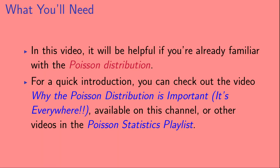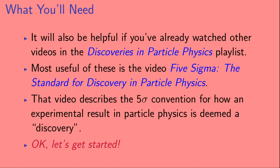In this video, it will be helpful if you're already familiar with the Poisson distribution. For a quick introduction, you can check out the video 'Why the Poisson Distribution is Important, It's Everywhere,' available on this channel, or other videos in the Poisson Statistics playlist. It will also be helpful if you've already watched other videos in the Discoveries in Particle Physics playlist, most useful of which is the video 'Five Sigma: the Standard for Discovery in Particle Physics.' That video describes the five-sigma convention for how an experimental result in particle physics is deemed a discovery.